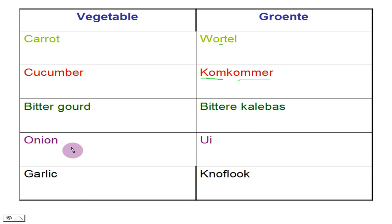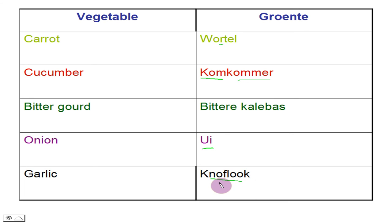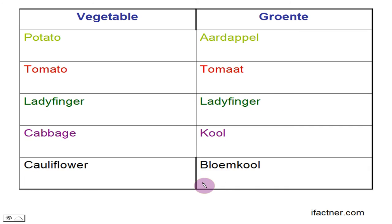Onion is ui. Ui. Garlic is knoflook. Knoflook.